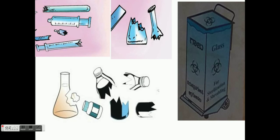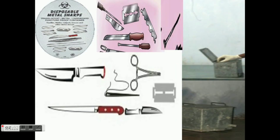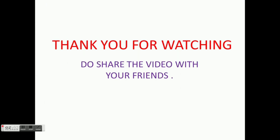Last is White. In White, we put Sharp Metals, Needles, and any Sharp objects. This is a simple method. Lastly, we should know that the Blue and White dustbins are puncture proof. Thank you for watching.